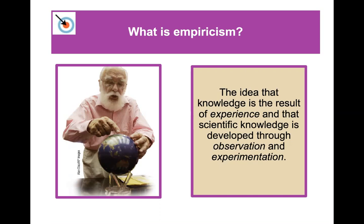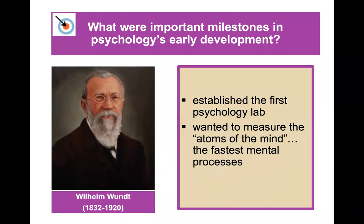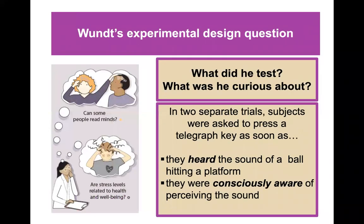Now we move on to famous early psychologists, starting with Wilhelm Wundt. He was German and established the first psychology lab in Leipzig, Germany in the late 1800s. He wanted to measure the atoms of the mind and understand the fastest mental processes. In his experiments, subjects were asked to press a telegraph key as soon as they heard a ball hitting a platform, and also as soon as they were consciously aware of perceiving the sound.